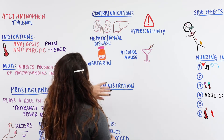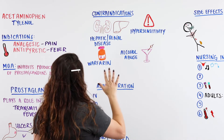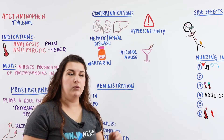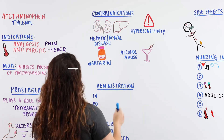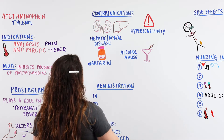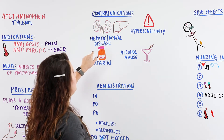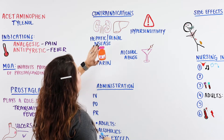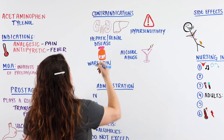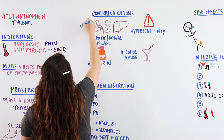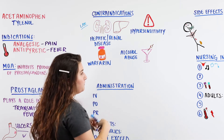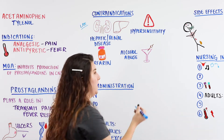Before we administer the medication, we want to think about contraindications. Tylenol is typically given for patients that have some type of bleeding issue so we don't give them an NSAID. However, there are a couple things to keep in mind with their history. The first is any type of hepatic or renal disease — a patient with a kidney or liver issue may require labs prior to giving Tylenol.